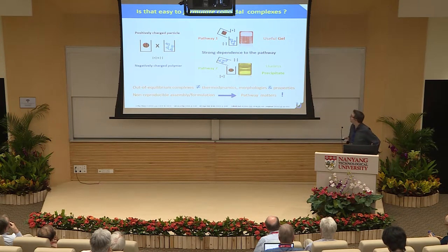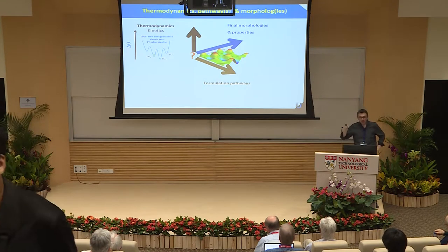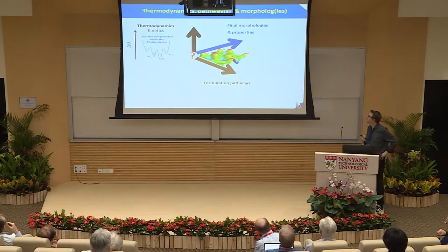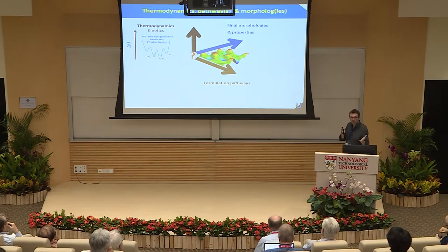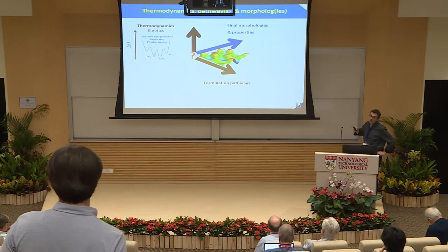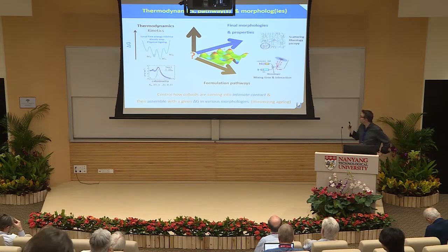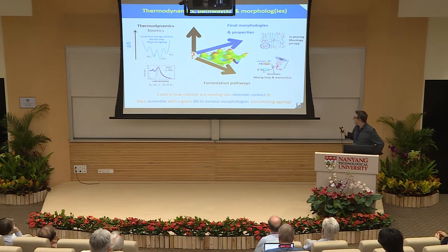The generated morphologies are strongly dependent on the way you prepare them. Pathway matters — we know that very well. This experiment triggered many years ago what we are basically trying to do nowadays: when we can, try to link the assembly thermodynamics with the generated morphologies through a formulation pathway, to better understand and control how the different components come into contact and generate different morphologies with a given delta G.